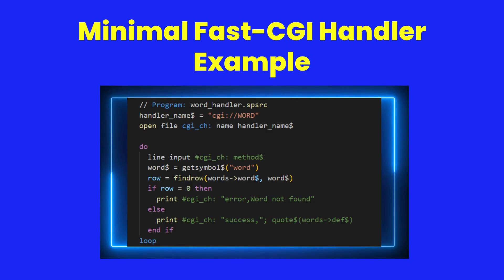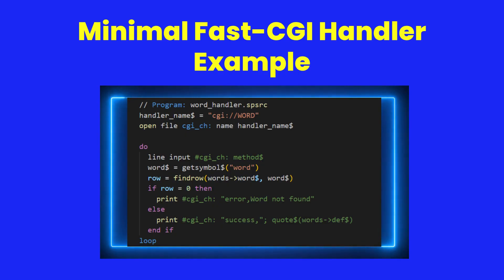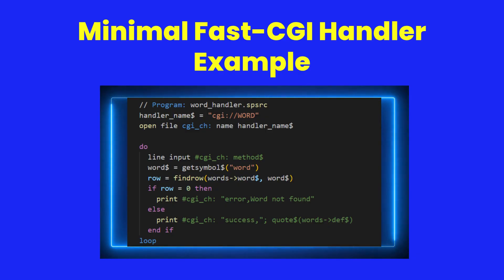Here's a minimal handler. We register the handler name, open it, and enter a polling loop. Each request is read, query parameters are extracted, and cluster lookups provide responses. If the word is found, we return the definition; otherwise, an error message. This loop persists, serving requests indefinitely.